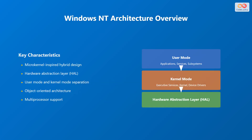Let's begin with an overview of the Windows NT architecture. Several key characteristics define its structure. First, it features a microkernel-inspired hybrid design, blending the benefits of both microkernels and monolithic kernels. Secondly, it incorporates a hardware abstraction layer, or HAL, which allows the operating system to work with various hardware configurations. Third, there is a clear separation between the user mode and kernel mode, enhancing system stability and security.